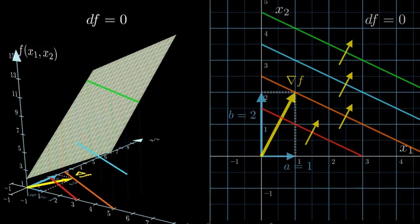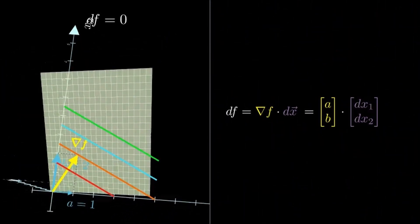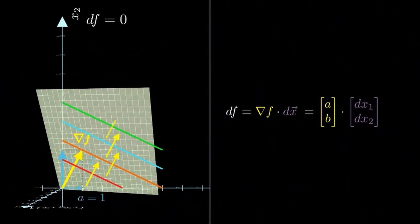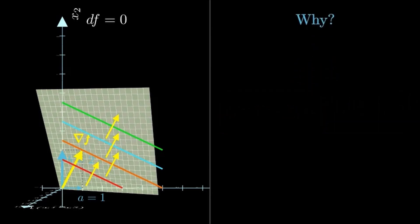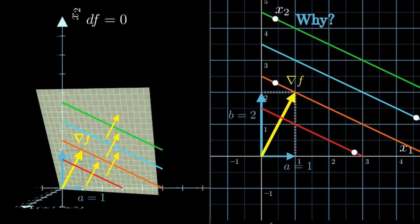Here's the formula for the total differential. It says the gradient vector dotted with the change vector [dx1, dx2] equals df. But since we're moving along the contour line, df = 0. So the dot product between the gradient and [dx1, dx2] must be zero. Why is that? Well, if the dot product of two non-zero vectors—the gradient vector and the [dx1, dx2] vector—is zero, the only possibility is that they're perpendicular.